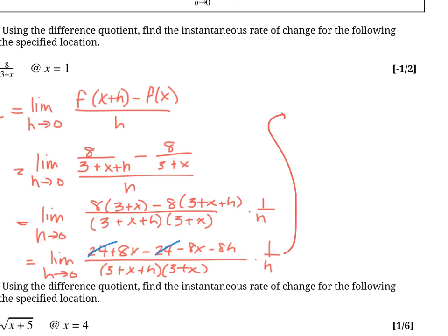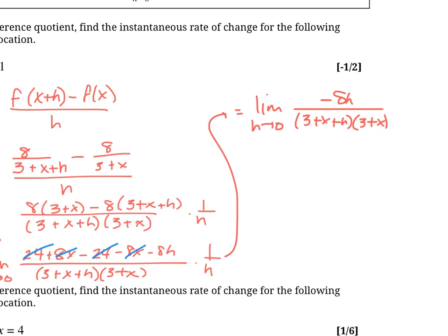And continuing along here. First of all, we see that these cancel out, right? And these cancel out. So essentially in the numerator, all we're left with is negative 8h. So this is equal to the limit still as h goes to 0 of negative 8h all over 3 plus x plus h times 3 plus x. And then this is all times 1 over h. So this h and this h are going to cancel out, right? And this should really always happen when we apply this thing. If it doesn't, go back and check your work.